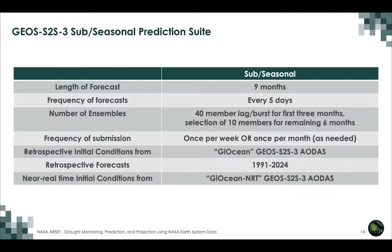Our seasonal prediction suite runs forecasts out for nine months. We issue forecasts every five days for sub-seasonal timescales; for monthlies we issue them once a month. We have 40 ensemble members for the first three months, then sub-select and run the remaining six months with only 10 members — getting the biggest bang for our computational resources. The 40 members give us what we need in extratropics for the first three months; beyond that, predictability in the extratropics is gone and we keep only 10 for the tropics for El Niño forecasts.